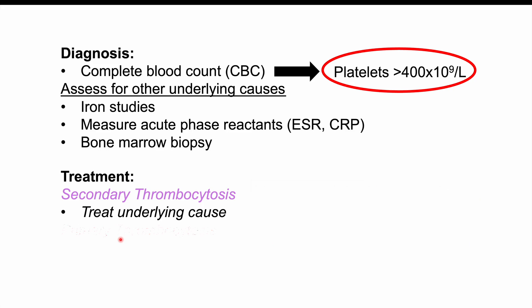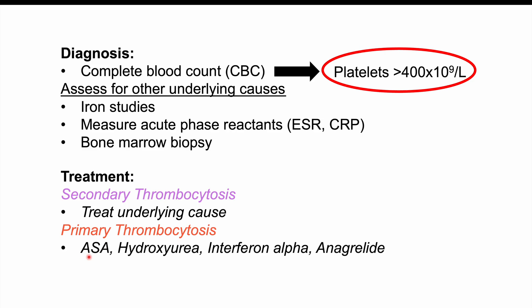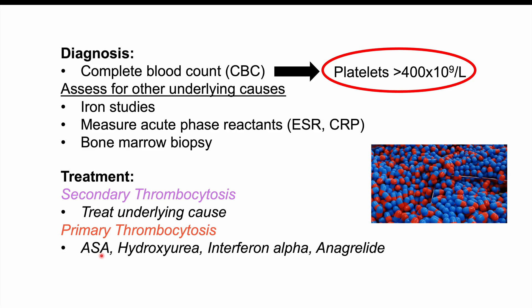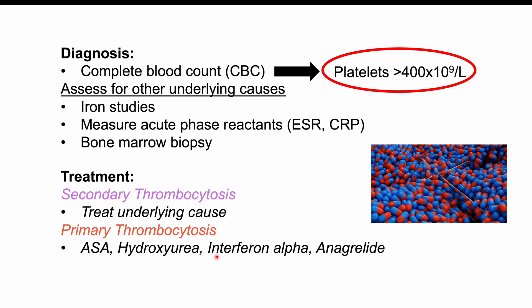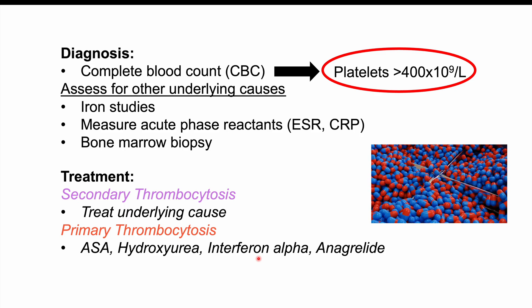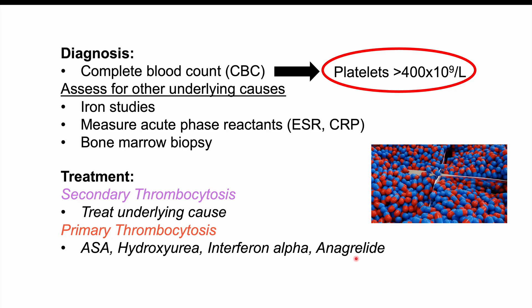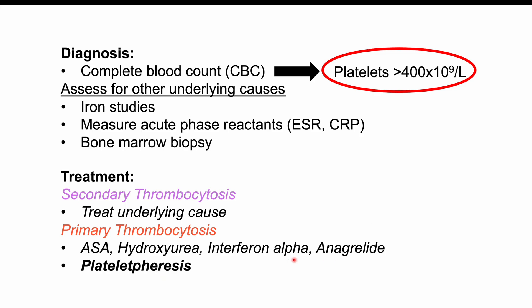With regards to primary thrombocytosis, depending on the cause, if it is CML, patients will have to be on chemotherapy. If it's one of those other causes like essential thrombocytosis, we may have to use ASA or aspirin, hydroxyurea, interferon alpha, or anagrelide. In more severe cases, platelet pheresis may be employed.